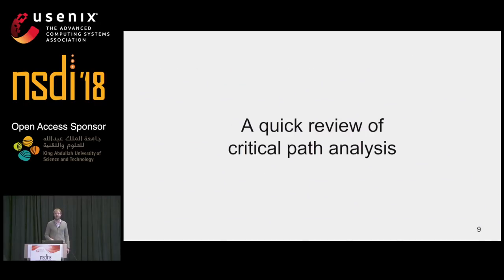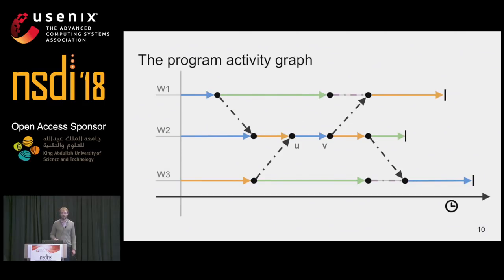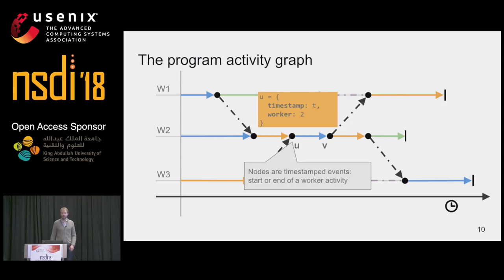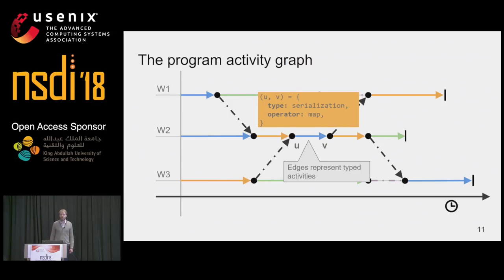There is a well-known technique that allows us to analyze latency bottlenecks. I'll now give you a quick review of critical path analysis. Critical path analysis can be applied on a graph. For that reason, we chose the existing program activity graph representation to be able to apply critical path analysis. A program activity graph consists of nodes and edges. Nodes represent timestamped events that indicate the start or end of a worker activity — for example, node U occurs at timestamp T on worker two. Edges represent typed activities. The edge U to V here is of type serialization and belongs to a map operator.